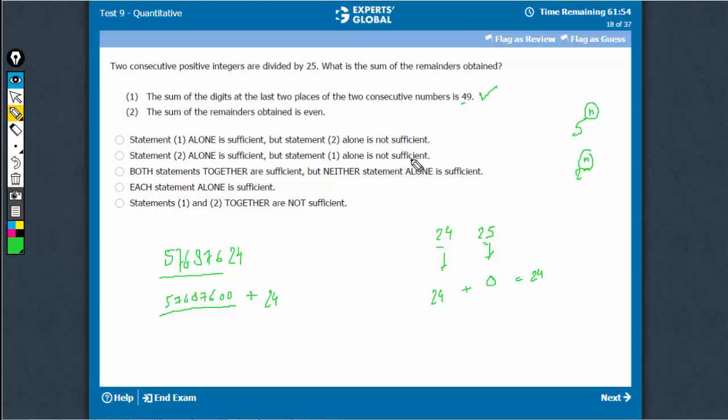Statement 1 is sufficient. The sum of remainders obtained is even. This is very interesting. How can the sum of remainders obtained be even? Because one is going to be even and the other is going to be odd. Many students will think that the statement does not hold. However, this does hold. This is possible when one remainder is 0.